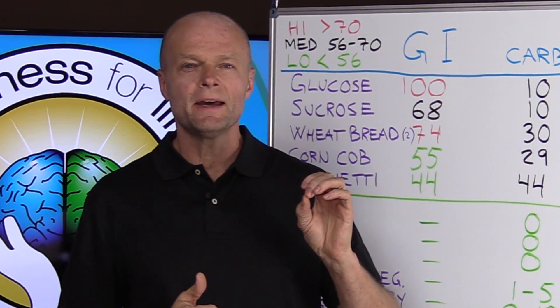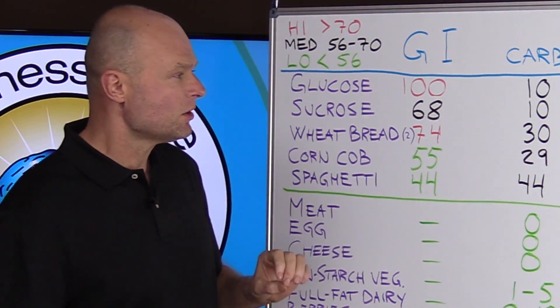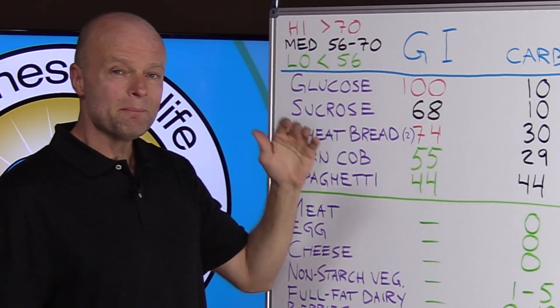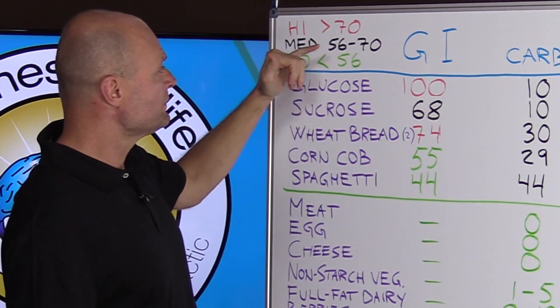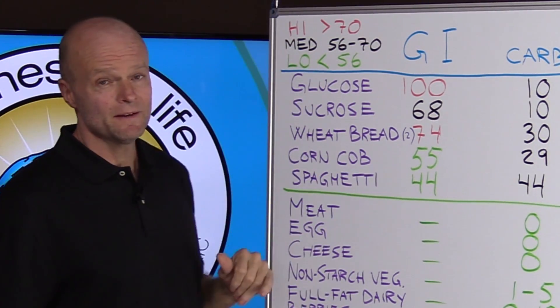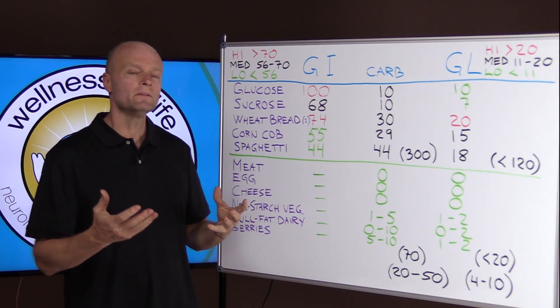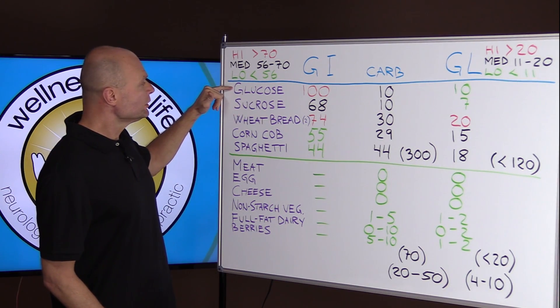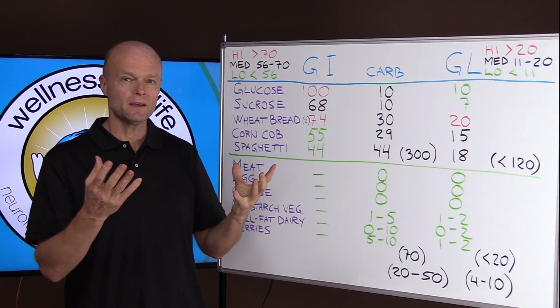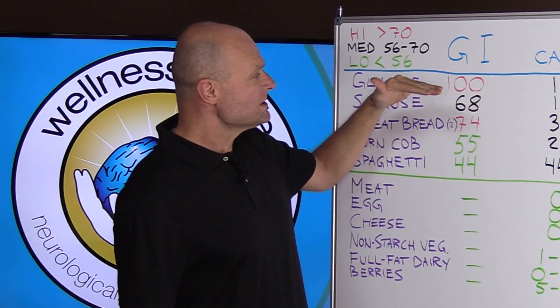Now here's the part that we have to clarify. The official guidelines are that a high glycemic index is above 70, a medium glycemic index is 56 to 70, and a low glycemic index is lower than 56. So how do they come up with these numbers? They're all relative to glucose. Pure glucose or grape sugar or dextrose, it's the same thing, is the index of 100. That's the reference.